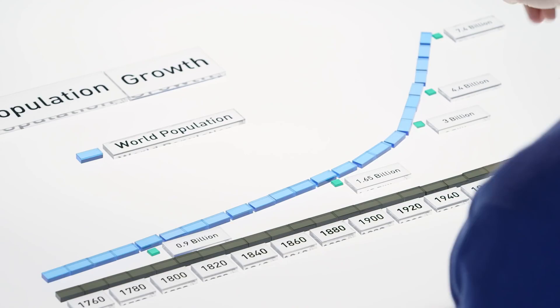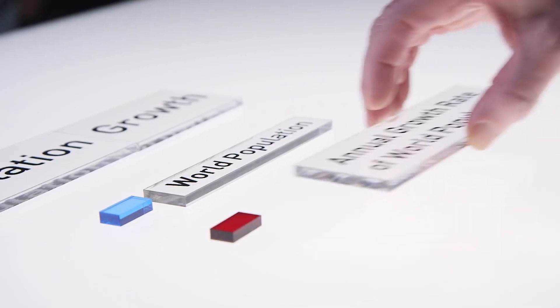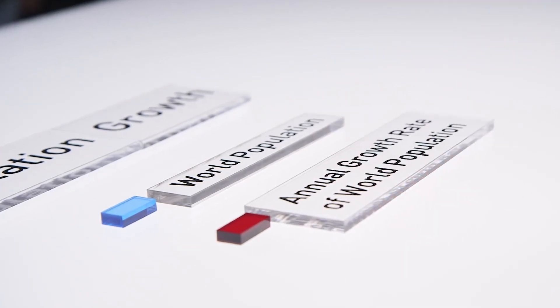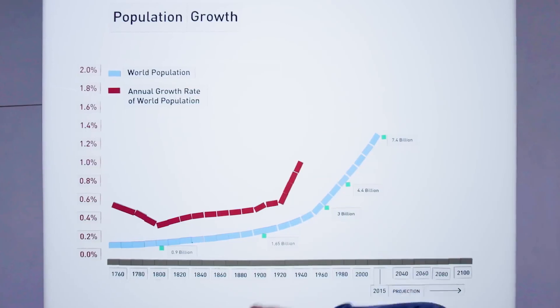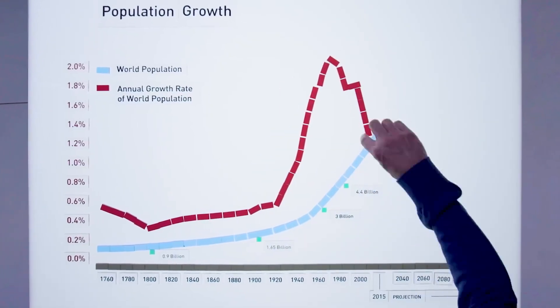So Melinda and I wondered whether providing new medicines and keeping children alive would create more of a population problem. What we found out is that as health improves, families choose to have fewer children. And this effect is very dramatic.